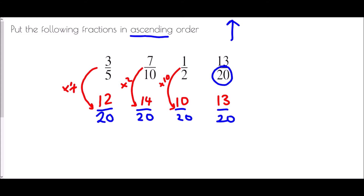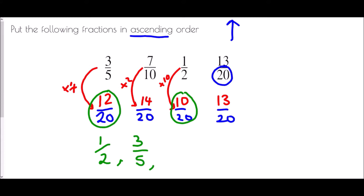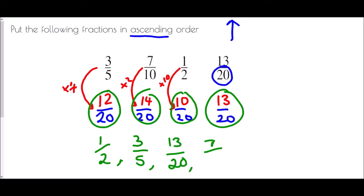Now that we have common denominators, we compare the numerators to find the smallest fraction. The smallest number is 10, so ten-twentieths is our smallest fraction — but we write it as it started: one-half. Then twelve-twentieths is three-fifths, then thirteen-twentieths stays as thirteen-twentieths, and finally fourteen-twentieths is seven-tenths. We've put them in order from smallest to biggest.